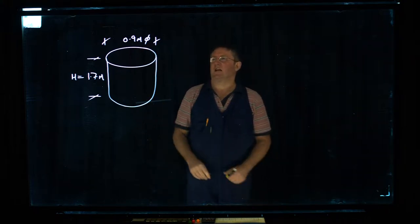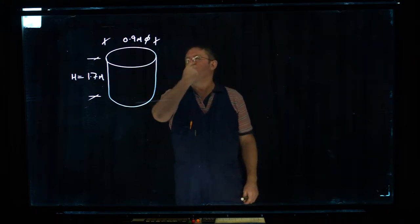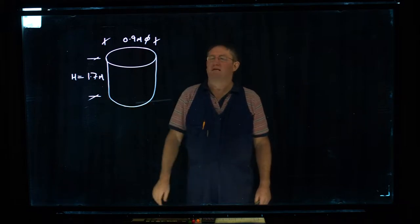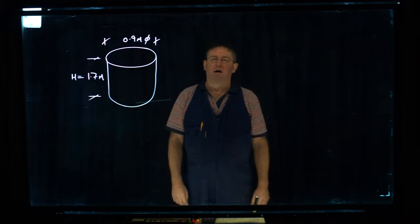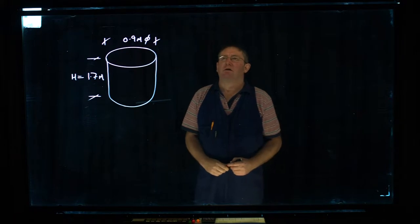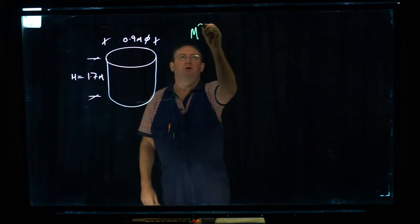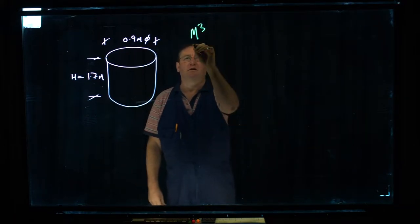OK, so we've got a cylinder here. It's 0.9 of a metre in diameter and it's 1.7 metres high. You need to work out the cubic capacity of it. So we want the metres cubed and we want the litreage of it.